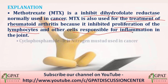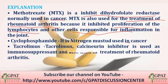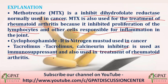Cyclophosphamide is a nitrogen mustard used in cancer. Tacrolimus is a calcineurin inhibitor used as an immunosuppressant, and it is also used in rheumatoid arthritis. So the correct answer remains methotrexate.